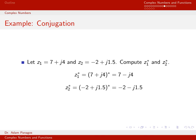Let's do an example of conjugation — this is almost trivial, but let's do it to be complete. Using the same z1 and z2, I'll compute their conjugates. For z1, the conjugate replaces all j's with negative j's, so we get 7 minus j4. Similarly for z2, everywhere I see a j I change it to negative j, so I end up with negative 2 minus j times 1.5.